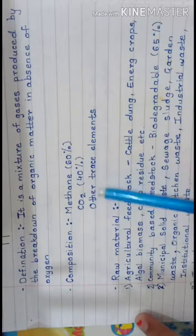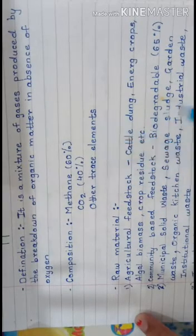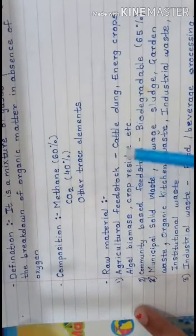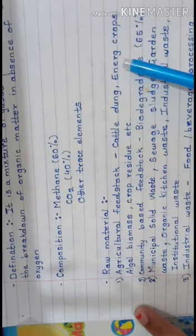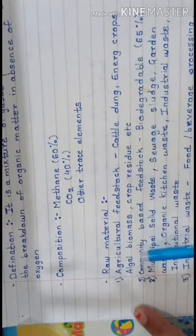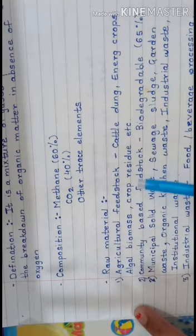The raw material which is used in the production of biogas is agricultural feedstock like cattle dung, energy crops like maize, sugarcane, beet, algal biomass, and crop residue.